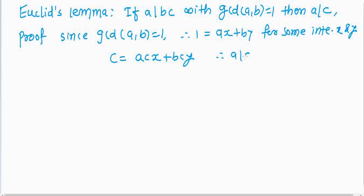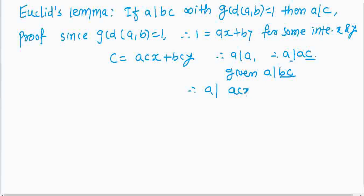Since a is a divisor of a, a is a divisor of ac. And it is given that a is a divisor of bc. This shows that a is a divisor of acx plus bcy, and consequently a is a divisor of c. So whenever a divides bc with gcd(a,b)=1, then a divides c.